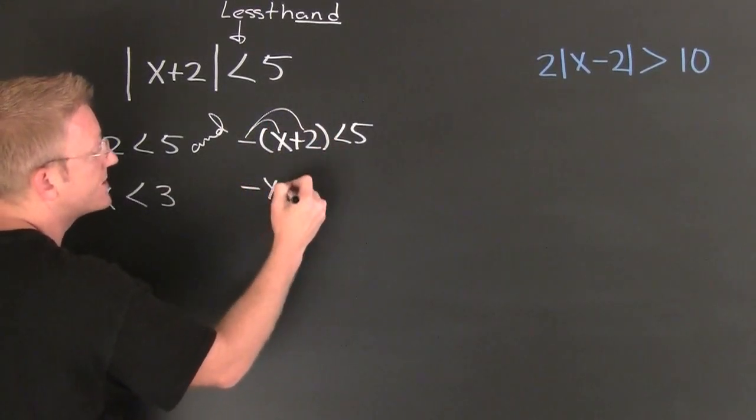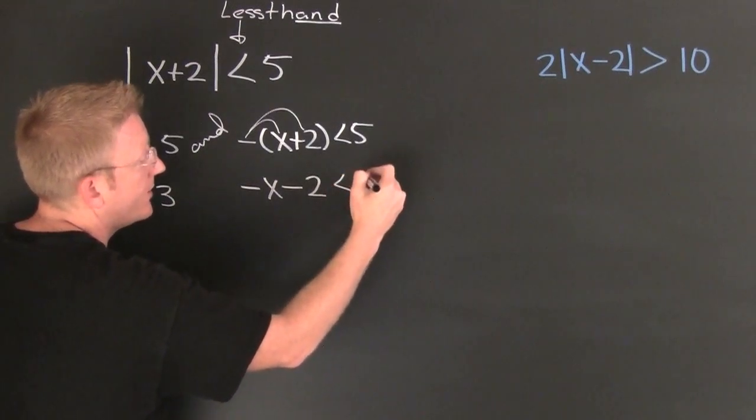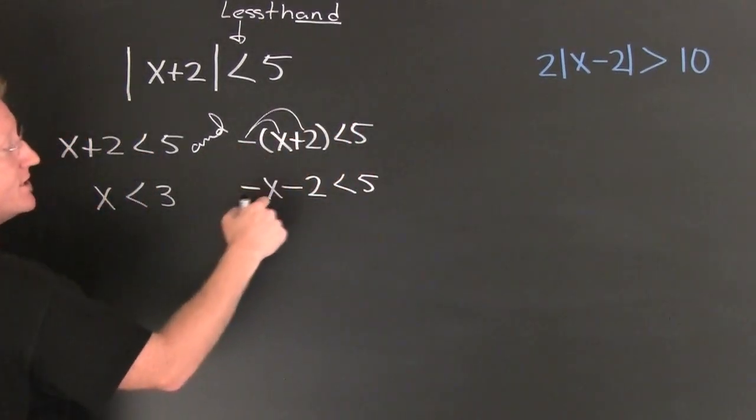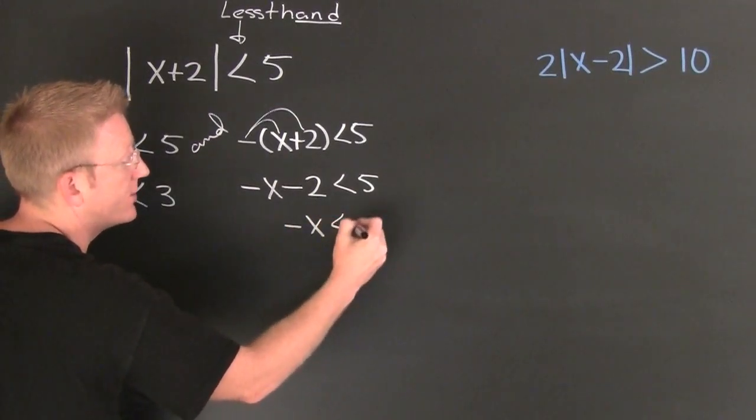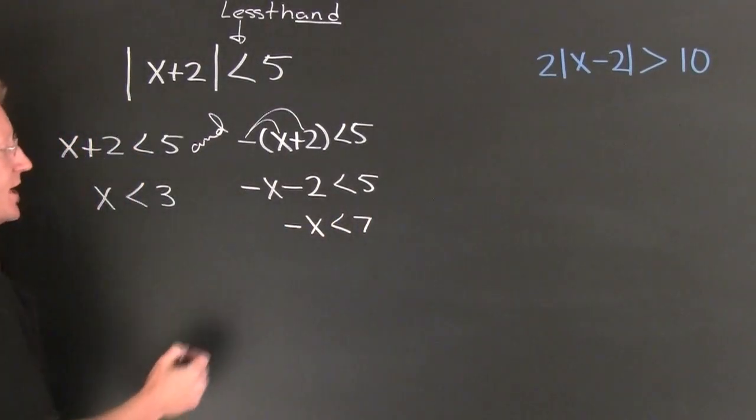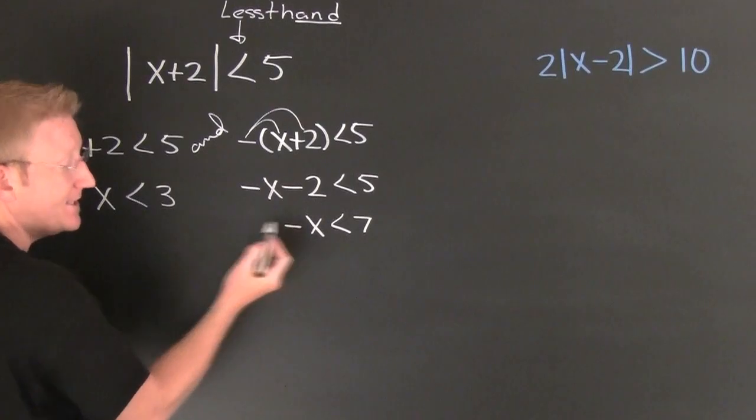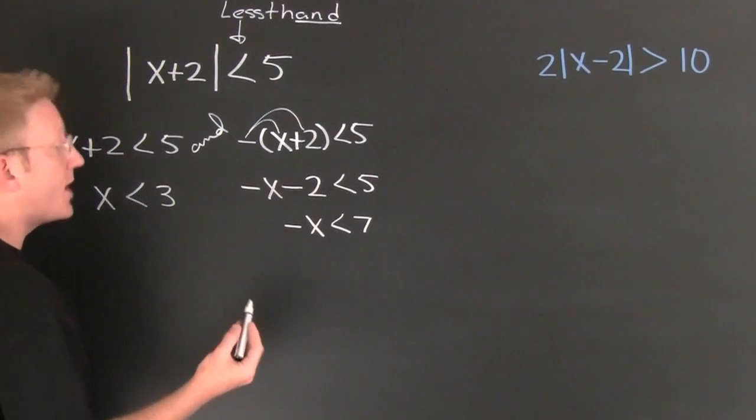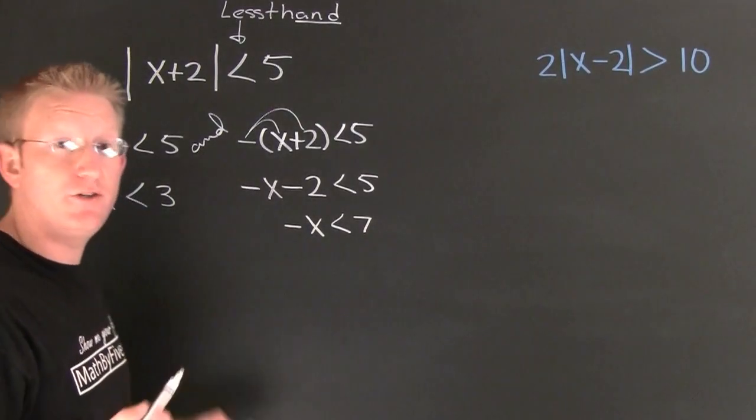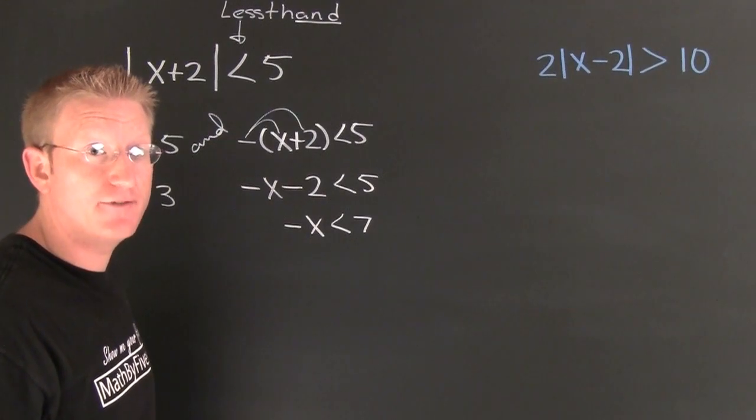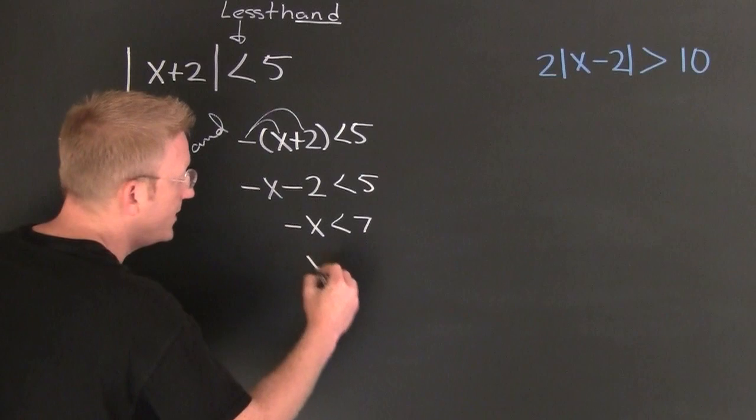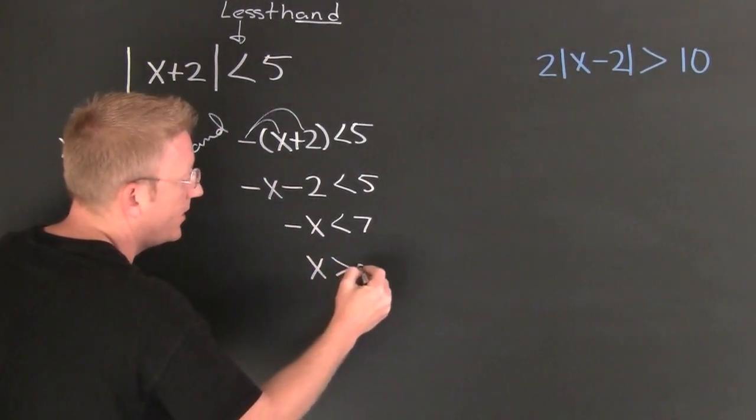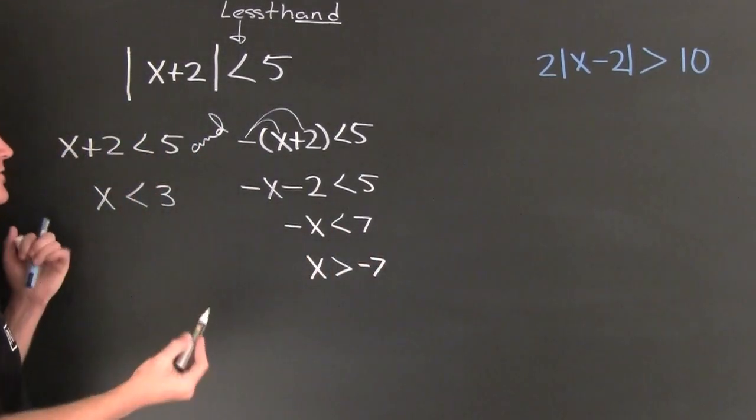Negative x minus 2 is smaller than 5. I'm going to add 2 to both sides so I have negative x is smaller than 7. Now I need to get rid of that minus sign so I'm going to multiply by negative 1. Whenever you multiply or divide by a negative number you have to switch the sign, so x is going to be bigger than negative 7.